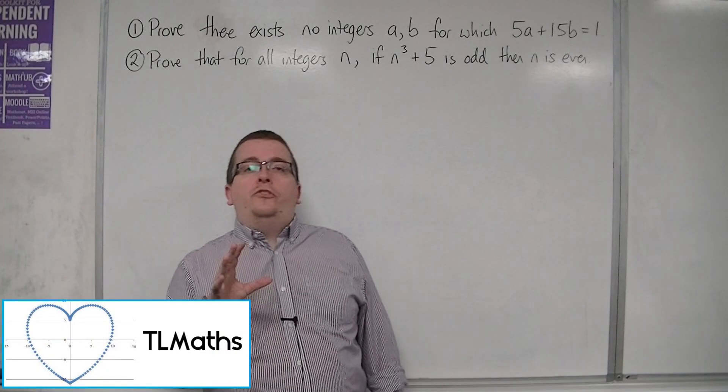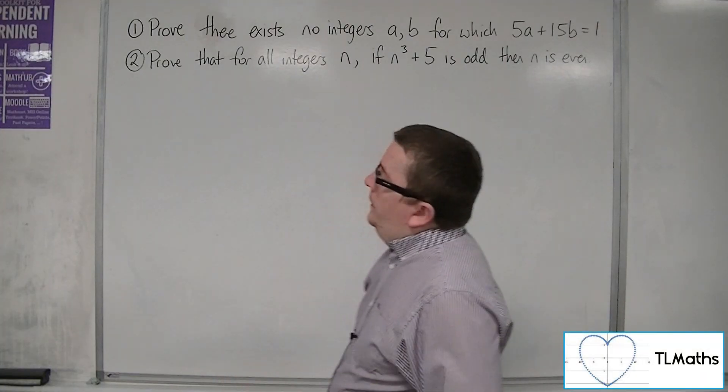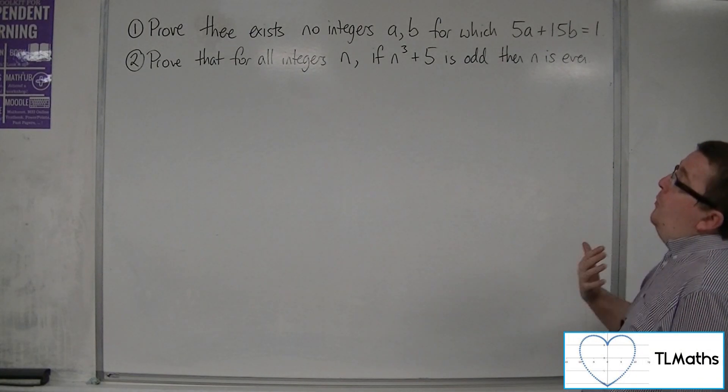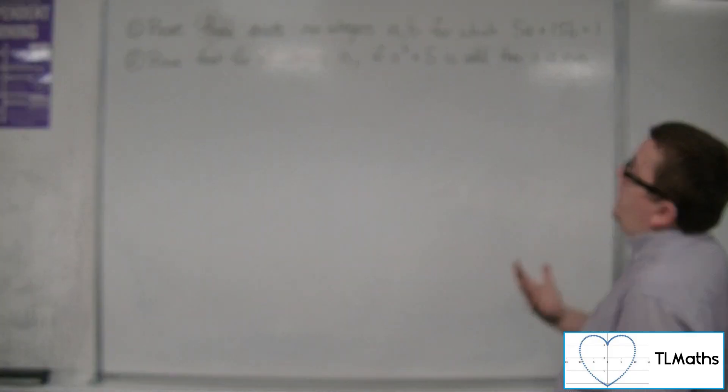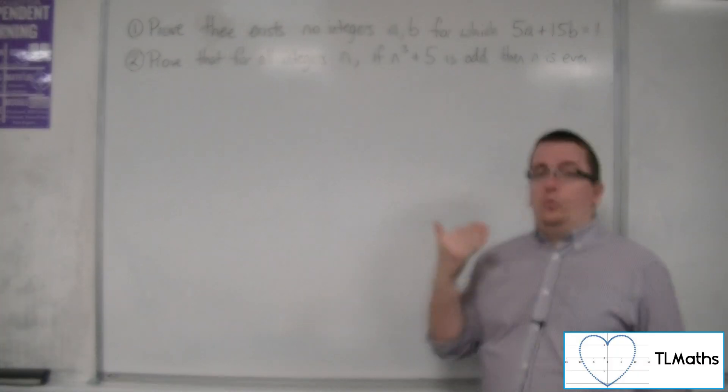In this video I'm going to go through two more examples of proof by contradiction. So in this first one we're going to prove there exists no integers a and b for which 5a plus 15b is equal to 1.